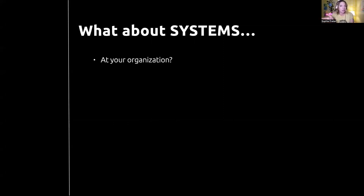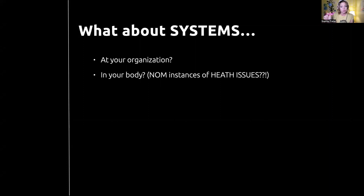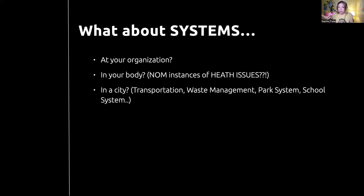So what about systems at your organization? Could you do a Nested Object Matrix on that? Internal systems — what about in your body? If you have multiple health issues, thinking about the interactions between them could help you come up with questions for your doctor or research questions for your Googling. In a city: if you're doing city planning at a government level, thinking about how transportation, waste management, park systems, and school systems all work together — doing a Nested Object Matrix would be gold.